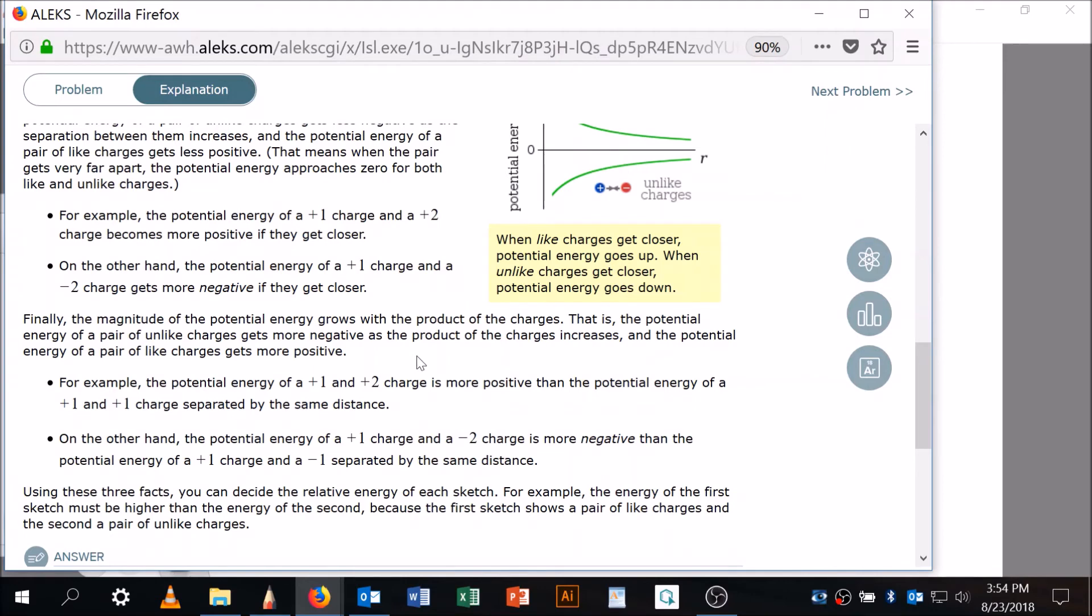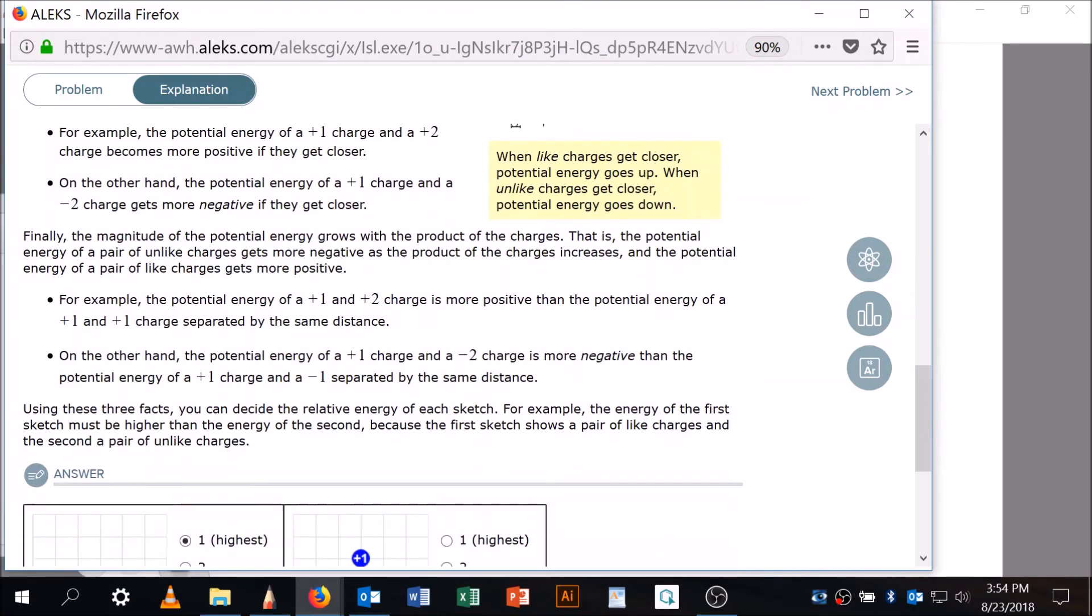Now, and I just read those in my own words, and then also the magnitude of the potential energy grows with the product of the charges. So, one and two is more positive than the potential energy of one and one, because what is one times two? It's two. What's one times one? It's one. So, this has a lower potential energy. You need to go through and read these. It's pretty wordy, but you need them.